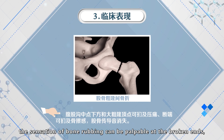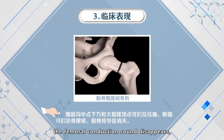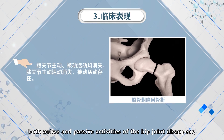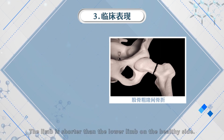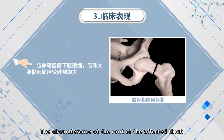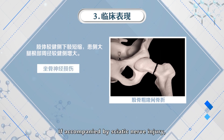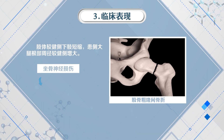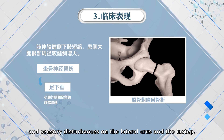The sensation of bone rubbing can be palpated at the broken ends and the femoral conduction sound disappears. Both active and passive activities of the hip joint disappear. The active activity of the knee joint disappears while passive activity exists. The limb is shorter than the lower limb on the healthy side, and the circumference of the root of the affected side is larger than that of the healthy side.